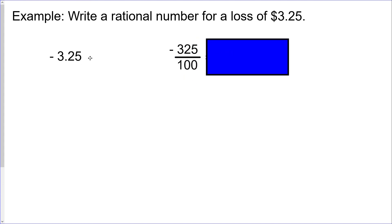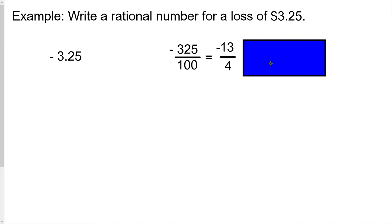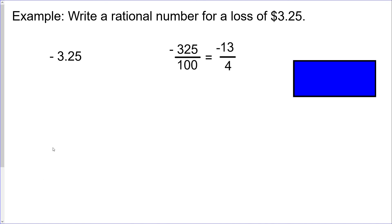There's a few different ways of approaching that one, but basically what we're going to do is convert that. Again, we're just using what we did on the last slide. Because there are two digits to the right of the decimal, we put the two zeros on the bottom, so we have negative 325 over 100, which can be reduced to negative 13 over 4.